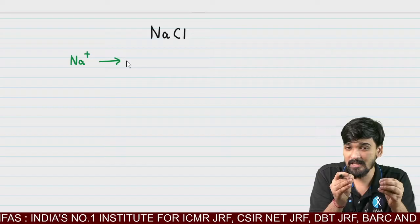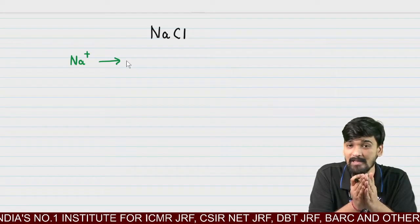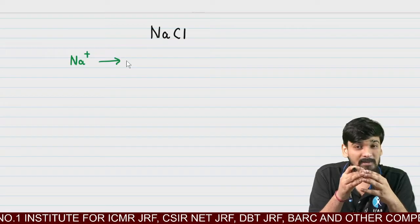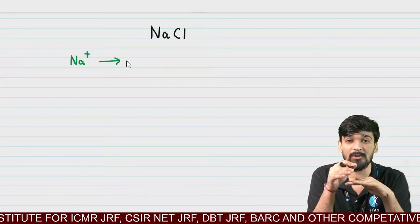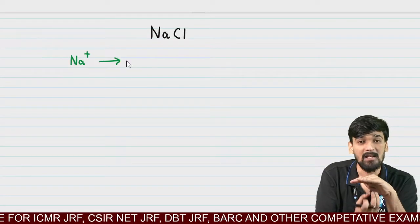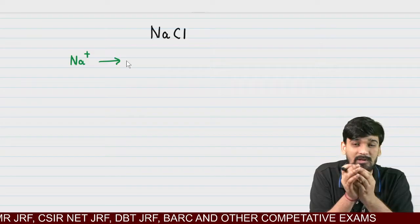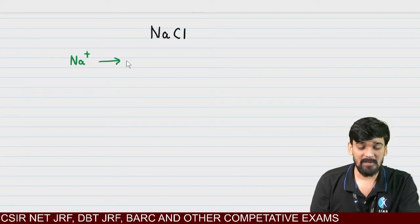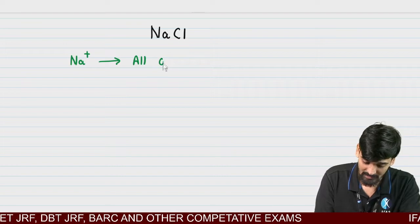What do you mean by octahedral voids? Octahedral voids are generally formed by six atoms or six spheres — by joining four spheres in one plane, with two spheres covering the upper cavity and one covering the below cavity. Then the void is known as the octahedral void. Na+ goes into all octahedral voids.